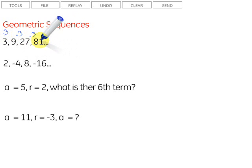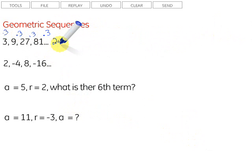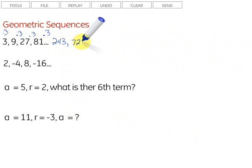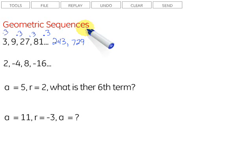We can get more terms by multiplying by 3, which gives us 243. Then we can take 243 and multiply by 3 to get 729. In a geometric sequence, to get from one term to the next, we multiply by the same thing. If we multiply by different things — say we multiply by 1, then by 2, then by 3 — that's not a geometric sequence.